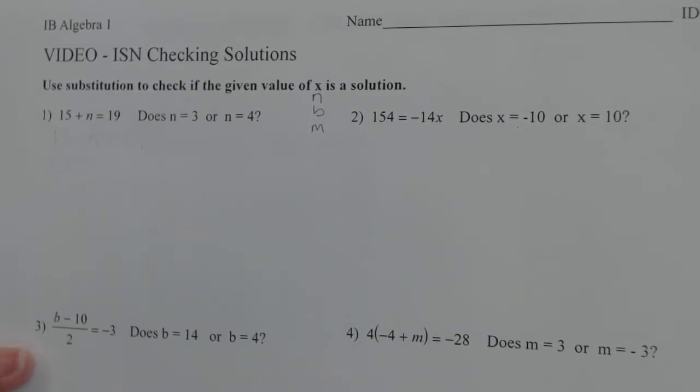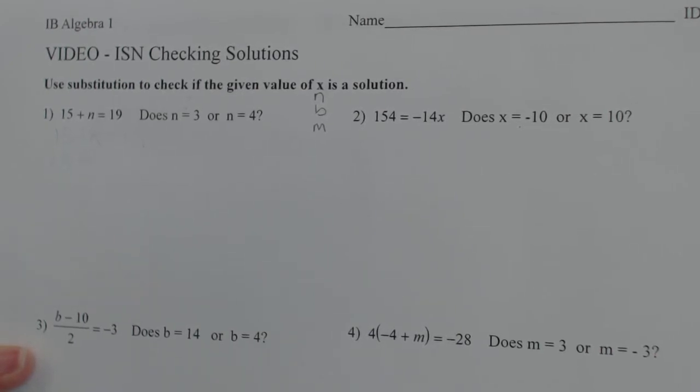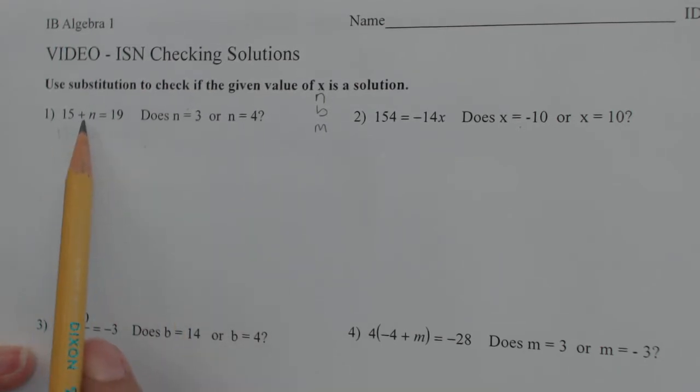Today we're going to be learning about checking solutions. The directions say use substitution to check if the given value of x is a solution. Now I just want you to see that sometimes we might not have the variable x, we might have n in number 1, we do have x in number 2, in number 3 we do have b, in number 4 we have m. So it might not always be x, but really what we're doing is we want to substitute the number in to see if it actually works. Does it make the equation true? Does it make it balanced?